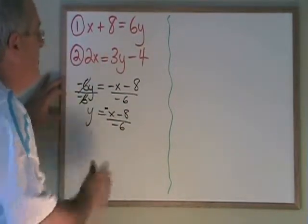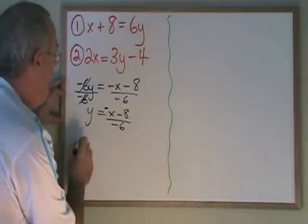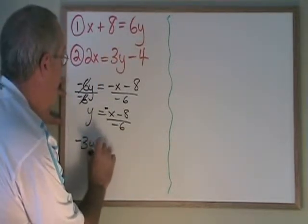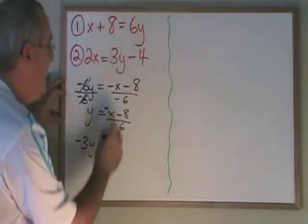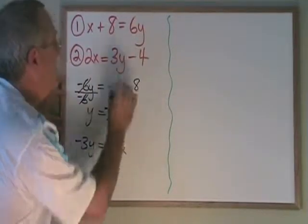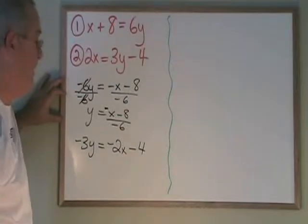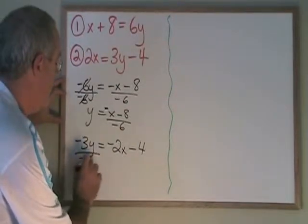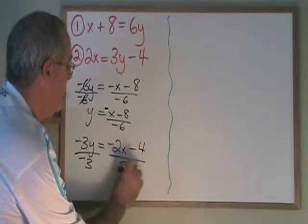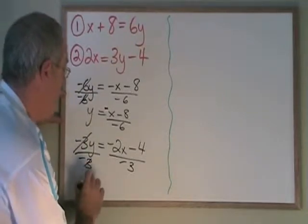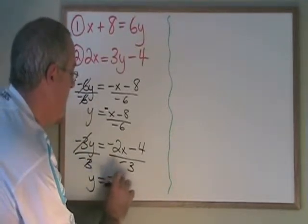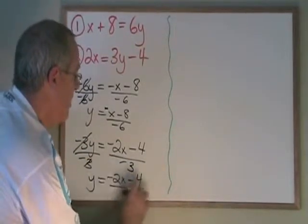The second equation, if I move the 3y to the left, it becomes negative 3y. If I move the 2x to the right, it becomes negative 2x. The minus 4 was on the right, and it's still on the right. Then, if I divide both sides by negative 3, these cancel, and I have y equals negative 2x minus 4 over negative 3.